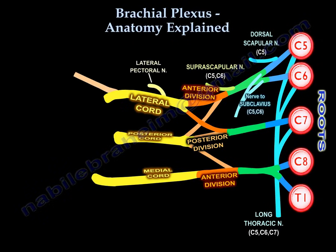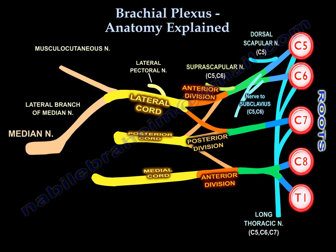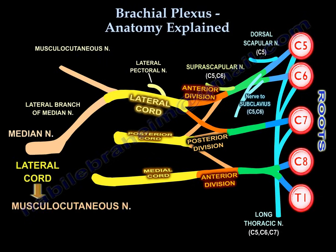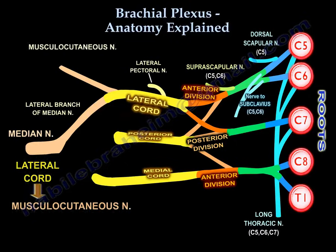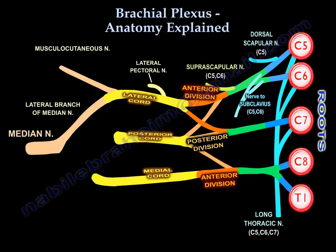The three branches of the lateral cord are: the lateral pectoral nerve, the musculocutaneous nerve, and the lateral branch of the median nerve. The lateral cord supplies the musculocutaneous nerve.